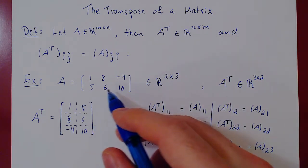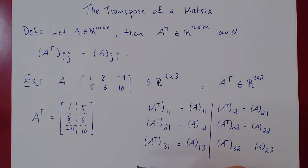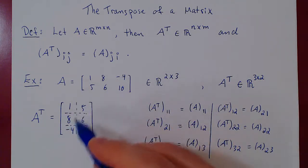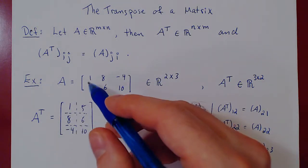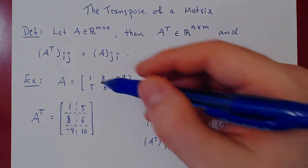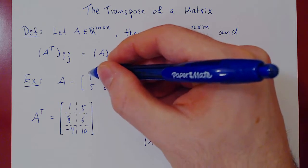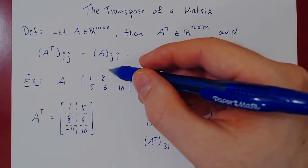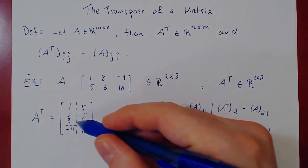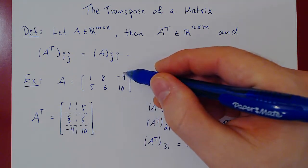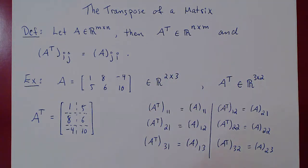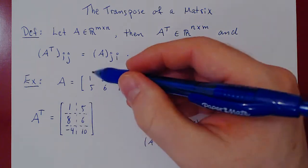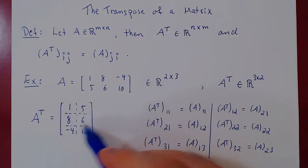As expected, the second row of A becomes the second column of A transposed. In the future, you can construct the transpose much more efficiently: the rows simply become the columns. First row of A → first column of A transposed; second row of A → second column of A transposed. Going backwards: the first column of A is the first row of A transposed; the second column of A is the second row of A transposed; the third column of A is the third row of A transposed.